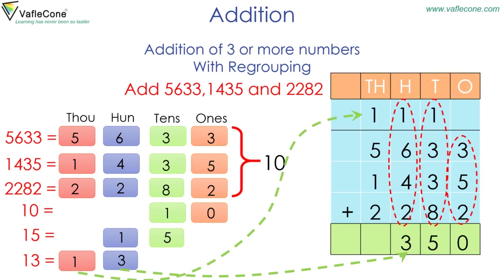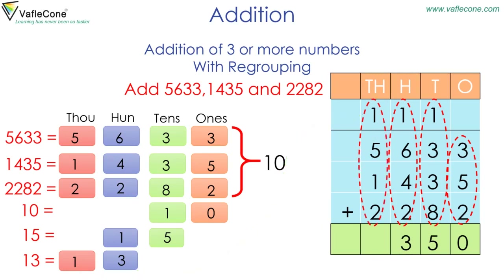Now do addition at the thousands place. One plus five plus one plus two is equal to nine. So the sum is 9350.